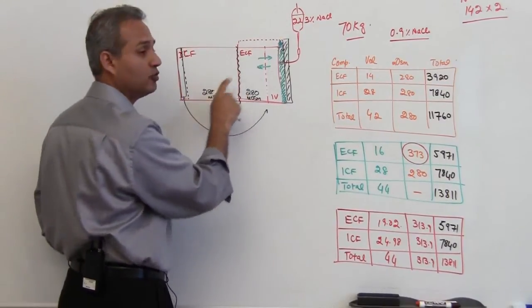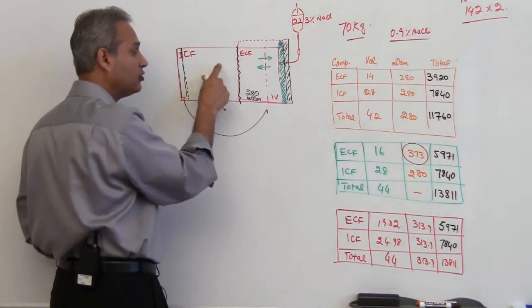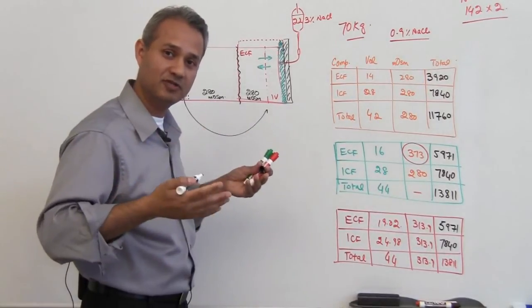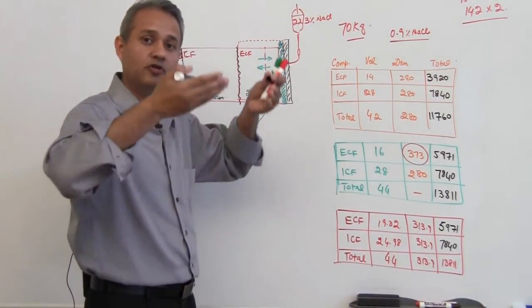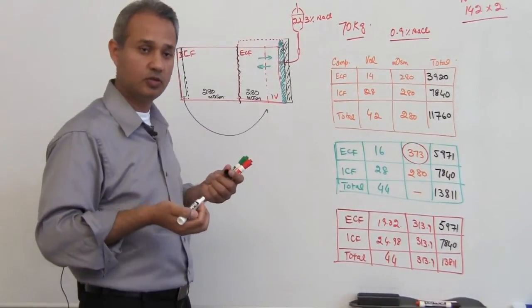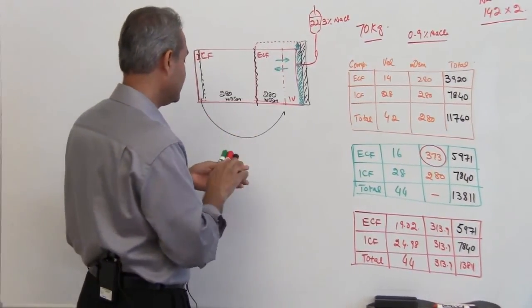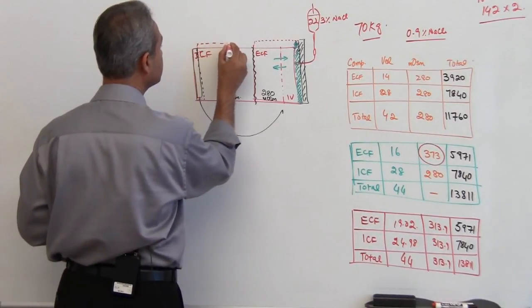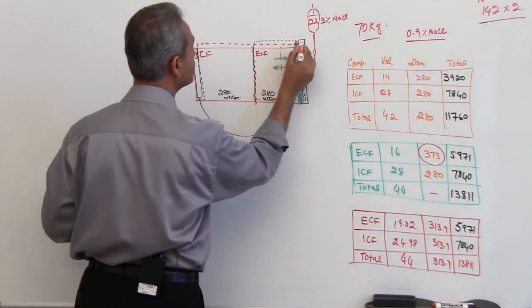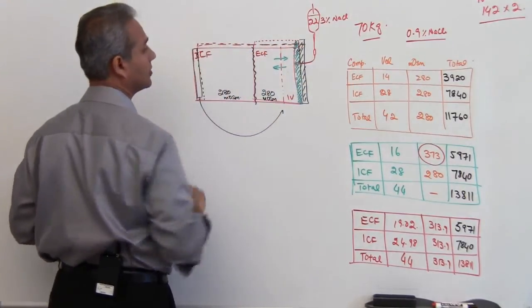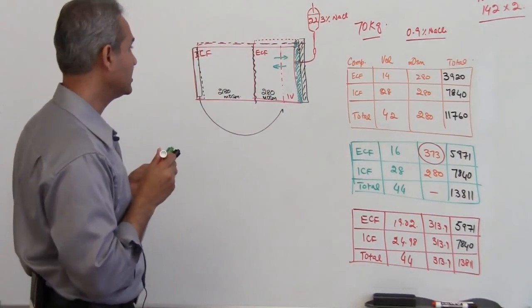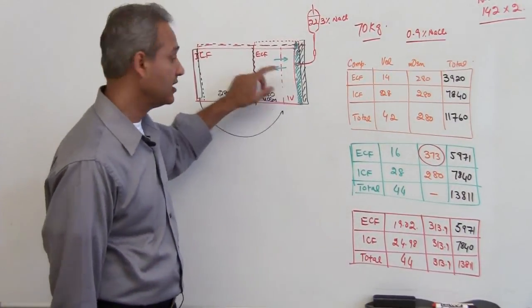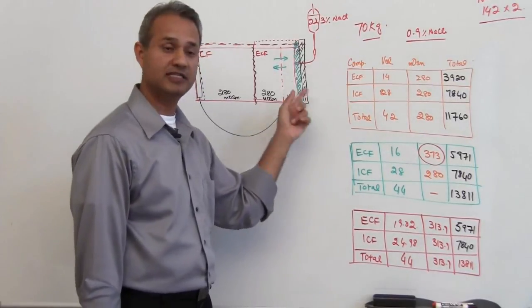Now when the fluid will move out but the solutes will not move out, what will happen to the relative concentration of the solutes? The relative concentration of solute would go up. Can I say that the osmolarity here would increase? Correct. This is what happened now. We had added some fluid that is sitting here, some more fluid moved from the ICF into the ECF.